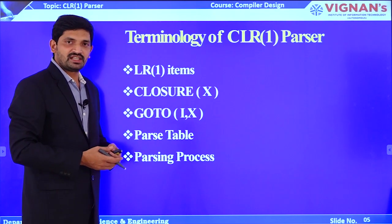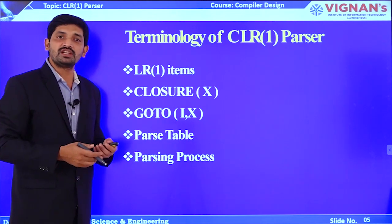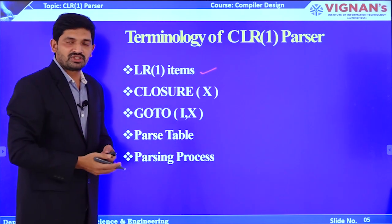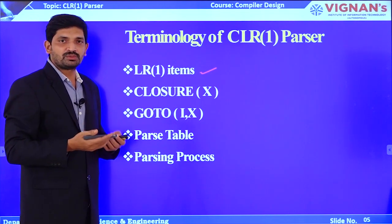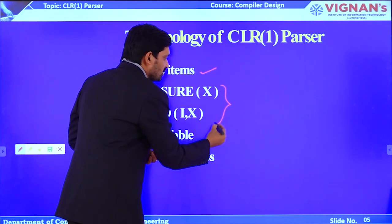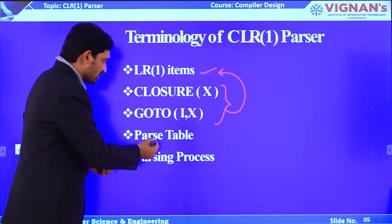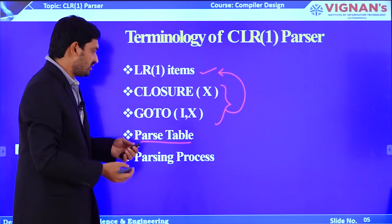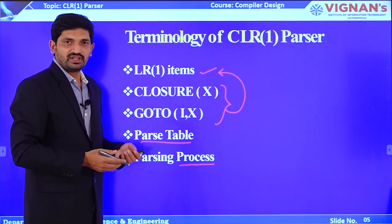Terminology of CLR 1 parser: to construct the CLR 1 parser, we have to construct the LR 1 canonical item set. The LR 1 canonical item set equals LR 0 items plus lookahead symbols. We apply the closure and goto operations to construct the LR 1 canonical item set, then construct the parse table with its help. The parsing process depends upon the parse table or LR 1 canonical item set.